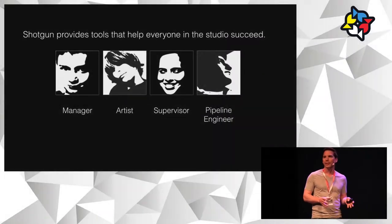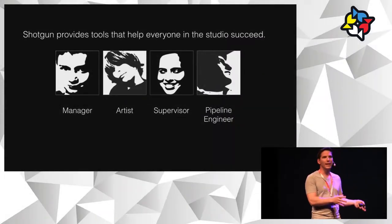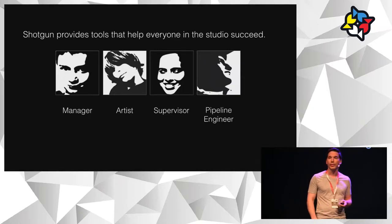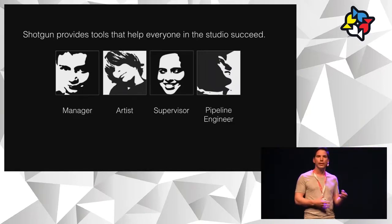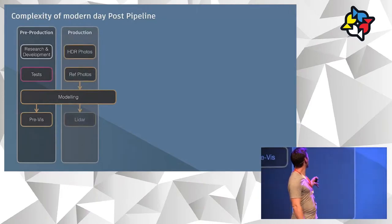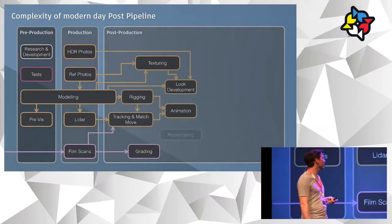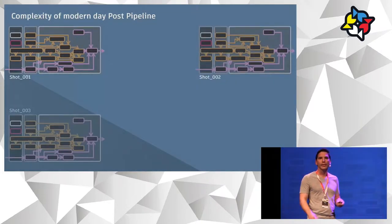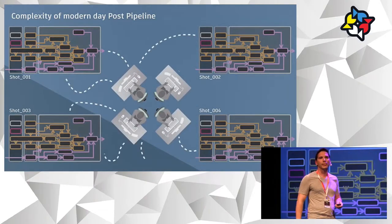There are a few personas I wanted to focus on and their different uses for Shotgun. We've got the manager — they want to think about Shotgun from a top-down, all-seeing-eye level to see what's going on across all departments. Then you've got the artists, who are more concerned with task tracking and their immediate to-do list. Then supervisors and art directors, who want to look at the review and approval side. And finally, your pipeline guys who want to interact with Shotgun from a technical level. A modern pipeline is incredibly complex — all sorts of departments involved, and they all need to communicate with each other.